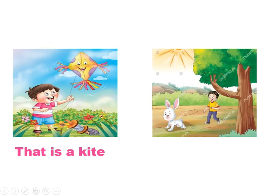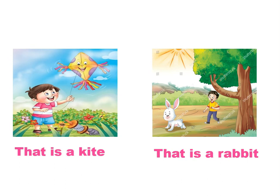Number two: 'That is a rabbit.' Is he near the rabbit? No, he isn't — الأرنب بعيد عنه، بيجري بسرعة. How many rabbits are there? One — ما فيش غيره، واحد. So: near or far? Far — excellent. And how many? One. So we use 'that'.